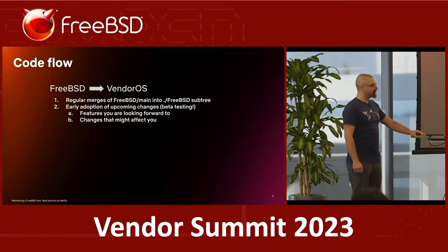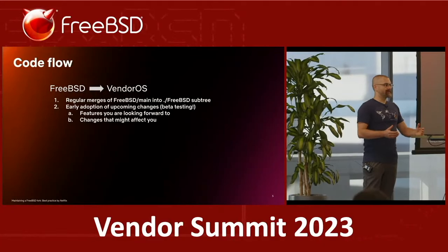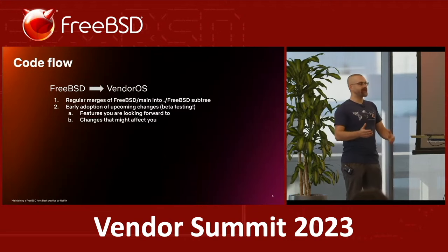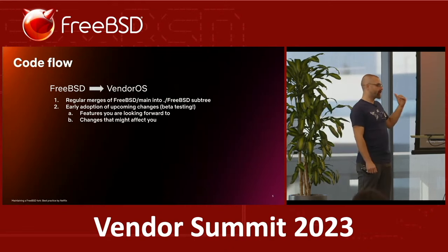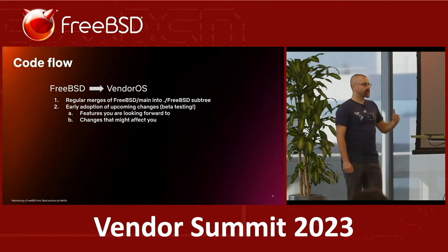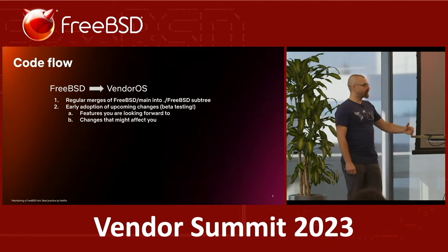The other thing is taking code from the open source community that hasn't even been committed to FreeBSD main. Why would you want to do that? Two reasons. Some projects you really want to use earlier than they get into FreeBSD main because you anticipate them to give you extra performance. For example, we started to use VM page cache long before it hit FreeBSD current. We started to use unmapped I/O before FreeBSD current started to use it. This is what I call early adoption.